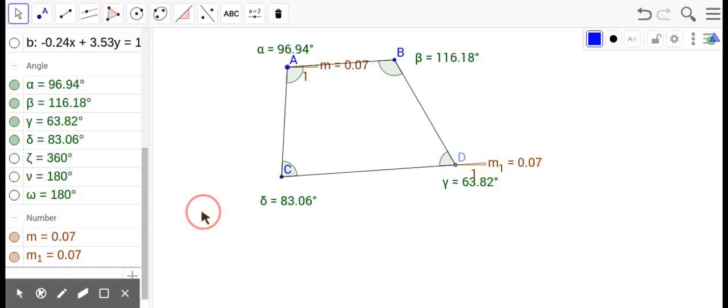But an interesting thing does happen. Look at the angles on the left side. 96.94, 83.06. That adds up to 180. Look at the angles on the right side. That adds up to, amazingly enough, 180. So what that says is that a top base angle plus a bottom base angle on the same side are supplementary.